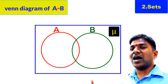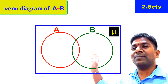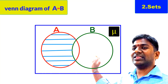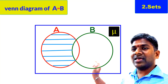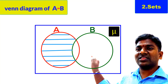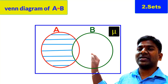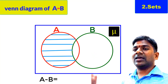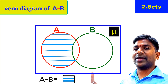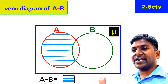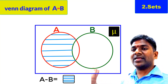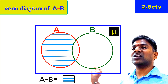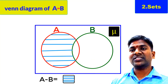Two overlapping circles represent set A and set B. The left side circle is set A, the right side circle is set B. A minus B is a set consisting of elements belonging to only set A and not to set B. So we shade the region which belongs to only set A and not to set B, as shown on the screen. The elements in that shaded region are the elements of A minus B. We write A minus B is equal to the shaded region below the Venn diagram.